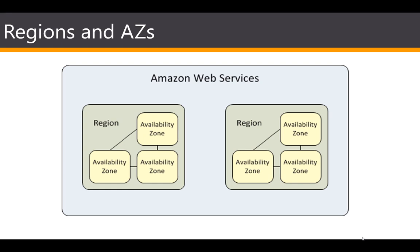EC2 resources are either global, tied to a region, or tied to an availability zone. When you view resources in your AWS environment, you'll only see the resources tied to the region you specify, because regions are isolated from each other. When you launch an instance, you must select an AMI that's in the same region. If an AMI is in another region, you can copy the AMI to the region you're using.